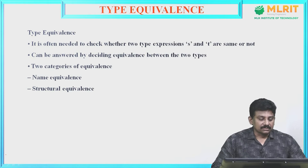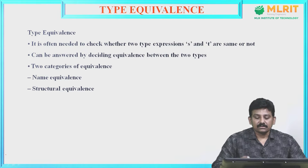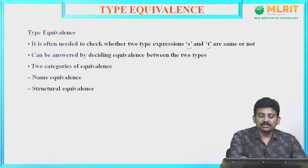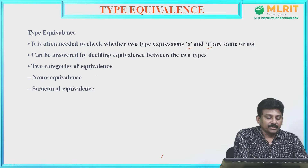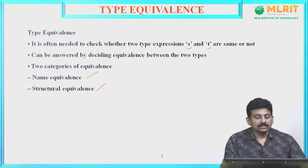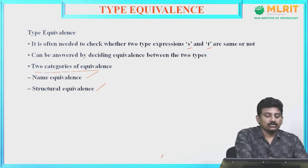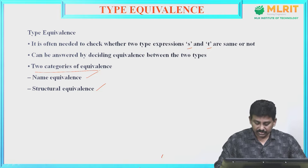Type equivalence: it is often necessary to check whether two types are equivalent or not. Here S is a type expression and T is a type expression. We have to check whether these two type expressions are equal or not. This can be done using two approaches: name equivalence and structural equivalence.